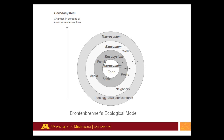Uri Bronfenbrenner differentiated between micro, meso, exo, and macro system influences on a young person's life. The child is at the center of the diagram. Microsystems are situations in which the child has face-to-face contact with influential others, such as peers and family.